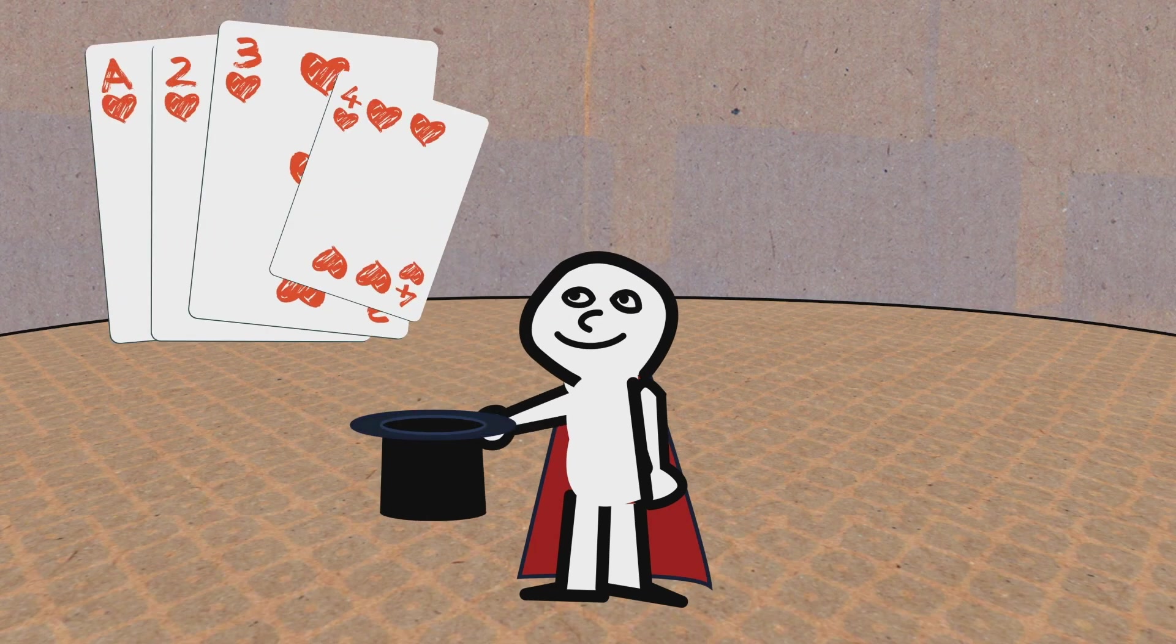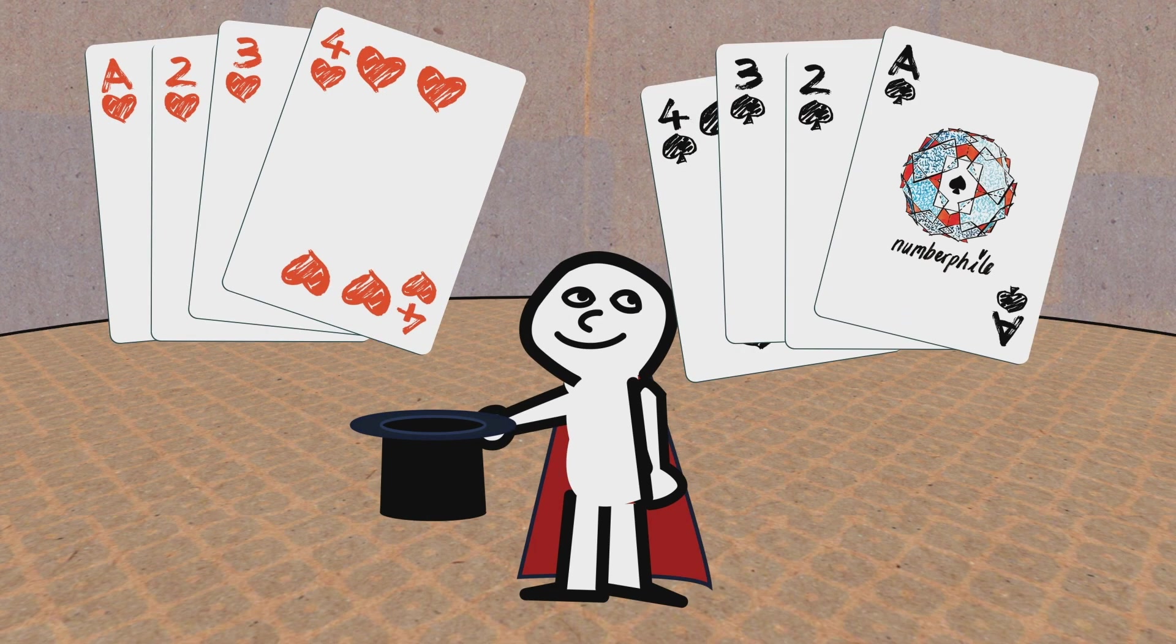Two sets of cards: 1, 2, 3, 4, aces 1, 4, 3, 2, 1, again aces 1, spades and hearts, black and red. They're in opposite orders.